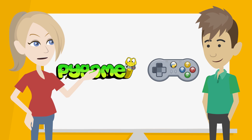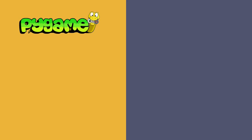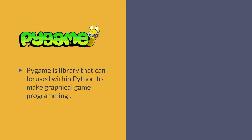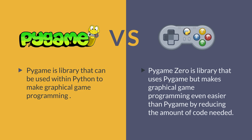What is the difference between PyGame and PyGame Zero? PyGame is a library that can be used within Python to make graphical game programming. PyGame Zero is a library that uses PyGame but makes graphical game programming even easier than PyGame by reducing the amount of code needed. Using this, it's possible to create characters on the screen and move them around very easily.